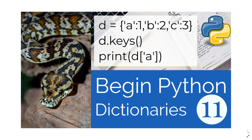This module is on dictionaries in Python. In Python, when we want to describe a new dictionary, we use the curly brackets, and then we have keys, which are like A, B, and C, and then the values 1, 2, and 3. So if I print D and then in these square brackets A, that's going to return a value of 1.